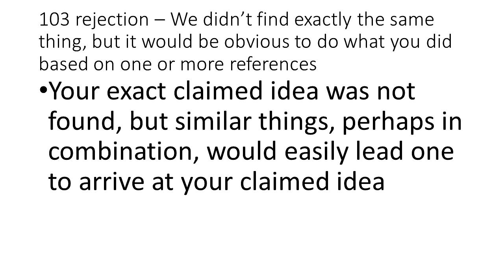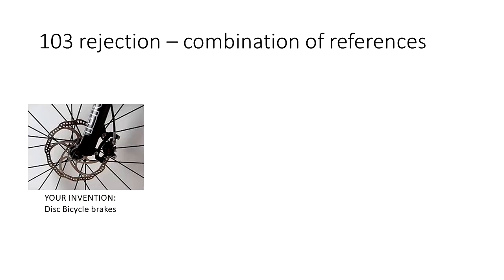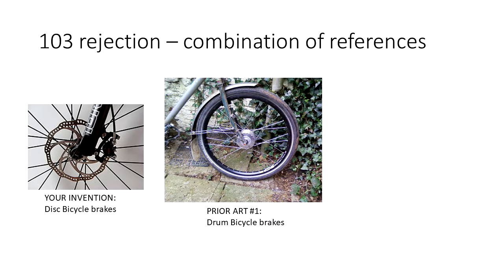A 103 rejection is also known as an obviousness rejection. It can sometimes be hard to wrap your head around these because they are subjective — it is hard to define precisely what is obvious and what isn't. As an example, let's say you were the first person to invent disc bicycle brakes. Prior to you coming along, no one had ever put a disc brake on a bicycle. So in doing a prior art search, the patent office finds some prior art. Suppose they find a reference for drum bicycle brakes.